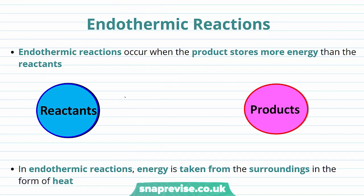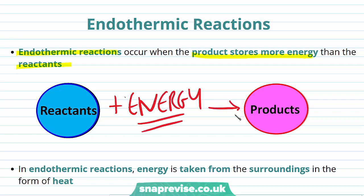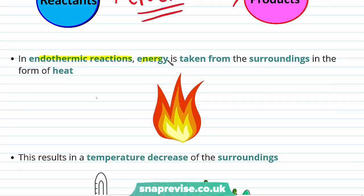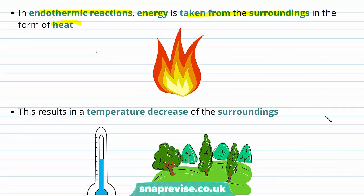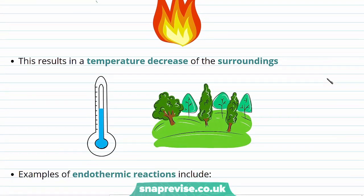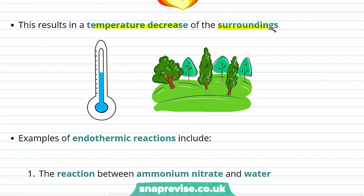The other type of reaction is known as an endothermic reaction. An endothermic reaction describes a reaction where the product stores more energy than the reactants. This means that the reactants need to take in energy in order to form the products. And in an endothermic reaction, this energy is taken in from the surroundings in the form of heat. If heat is taken away, this is the same as a cooling effect, and endothermic reactions will lead to a temperature decrease of the surroundings. The reactants will take in heat in order for the reaction to happen, which will decrease the amount of heat available in the surroundings and cause the temperature to go down.